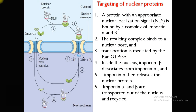The targeting of nuclear proteins occurs in different steps. In step one, the nuclear protein contains an NLS — Nuclear Localization Signal — a specific signal required for transportation. This nuclear protein with its NLS signal binds to a complex of two important proteins: importin-alpha and importin-beta. Both importin-alpha and importin-beta bind with the nuclear protein to make this complex.